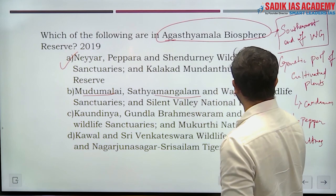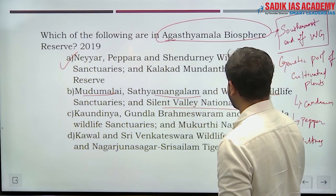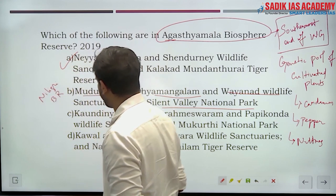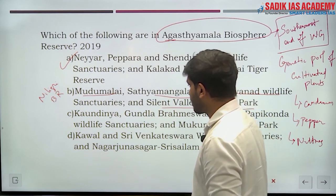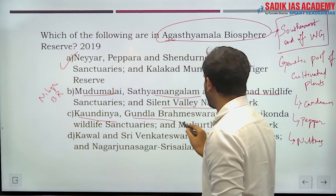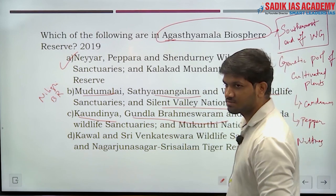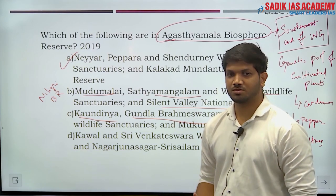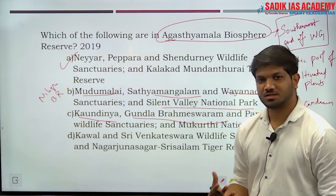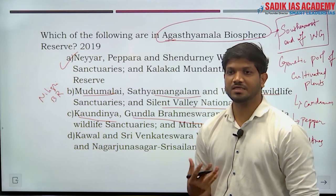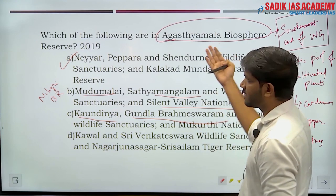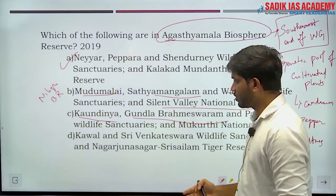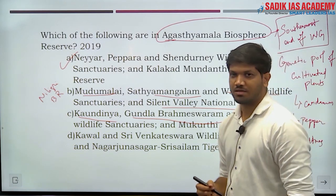Mudumalai, Satyamangalam, and Wayanad Wildlife Sanctuaries, plus Silent Valley National Park, are all in the Nilgiri Biosphere Reserve. Knowing the location helps eliminate wrong options — for example, Papikonda is in the Eastern Ghats in Andhra Pradesh, so it can be easily eliminated from questions about Western Ghats reserves.